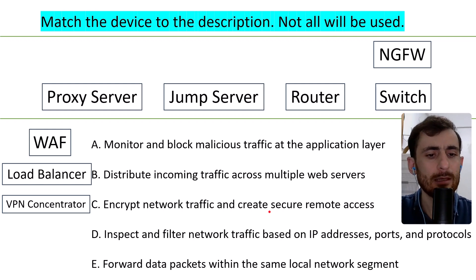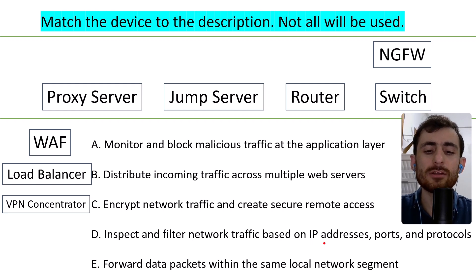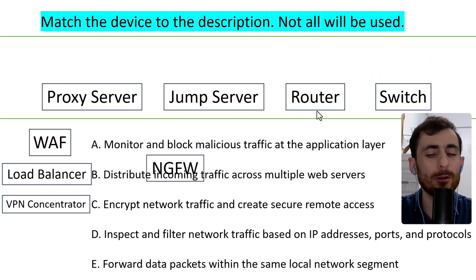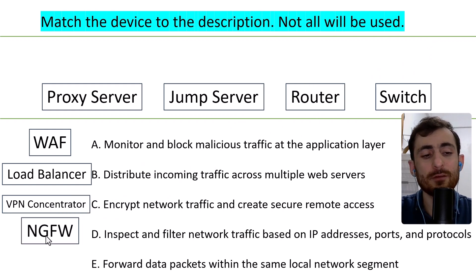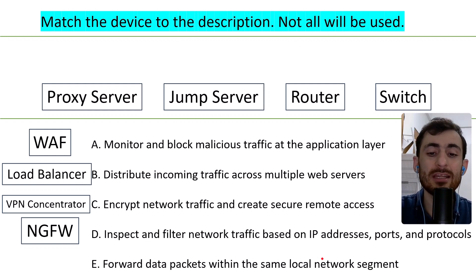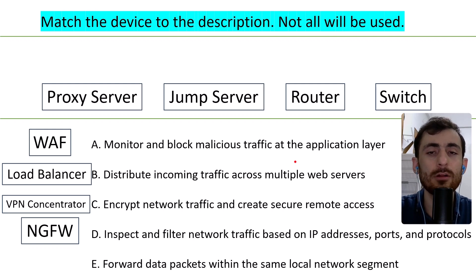Option D: inspect and filter network traffic based on IP address, ports, and protocols. That's the next generation firewall (NGFW). The difference between NGFW and a web application firewall is that the NGFW is placed on the network itself and monitors that, while the web application firewall, as the name suggests, operates at the web application layer.